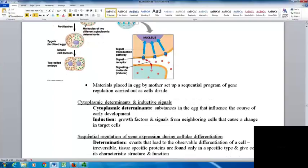This happens a lot using cytoplasmic determinants, which are substances in the egg that influence the course of early development. Induction involves growth factors and signals from neighboring cells that cause a change in target cells. Part of it is from the environment, part from the egg itself, helping to create the specialization of the multicellular organism.